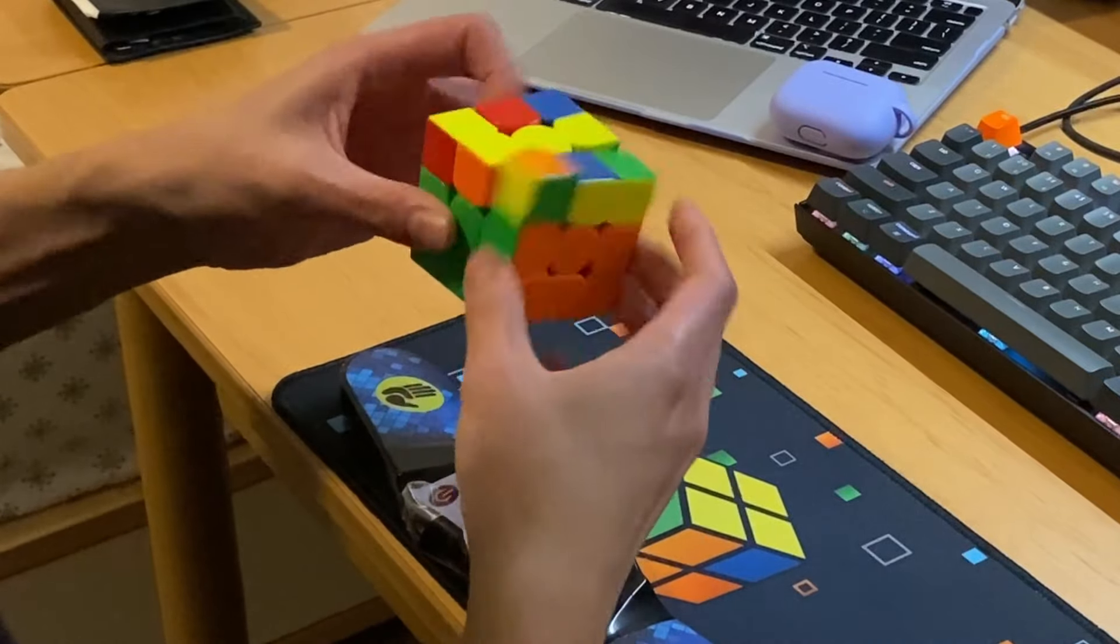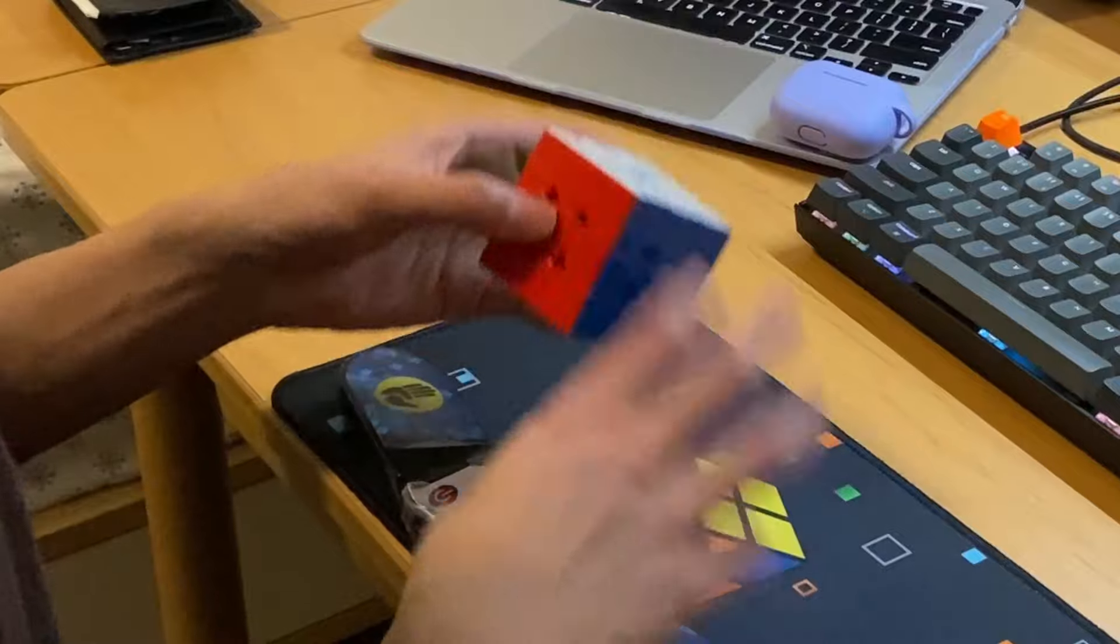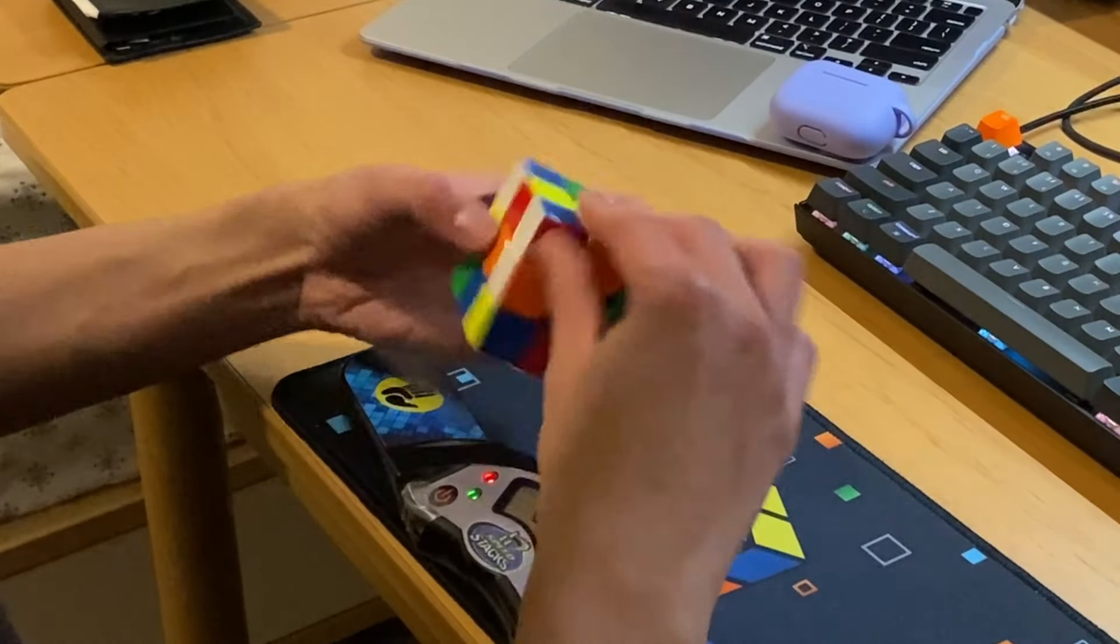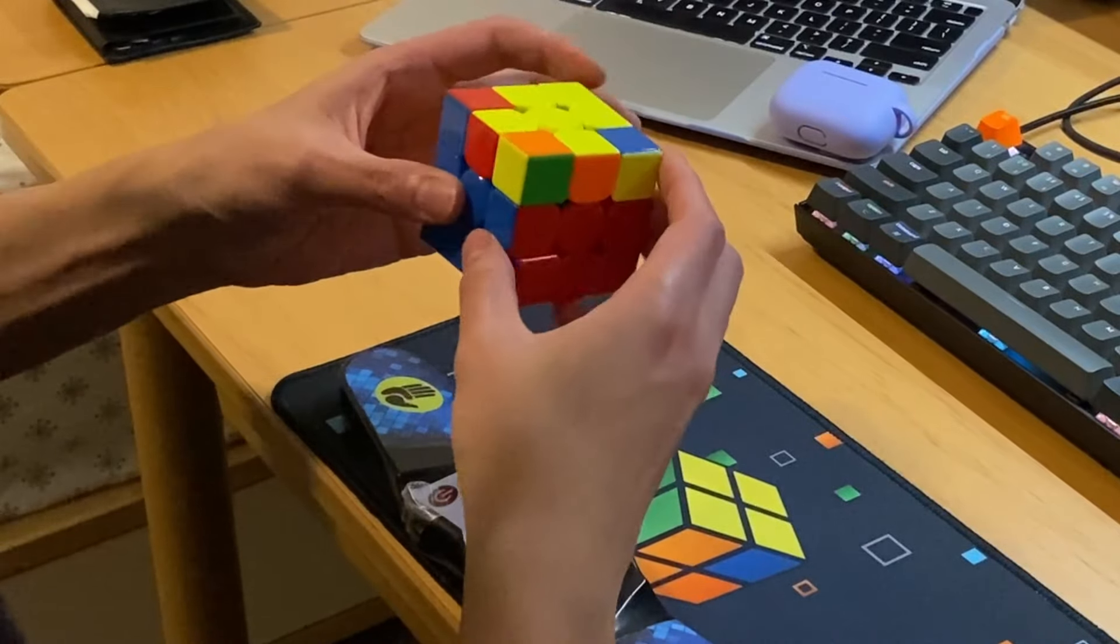Not all cubes do that. Some cubes will just take the lube, consume it, and still be fast, and they're hard to slow down. But I think the RS3M V5 works very well with a lot of different types of lubes, and it can be easily customized to have the turning speed that you want.